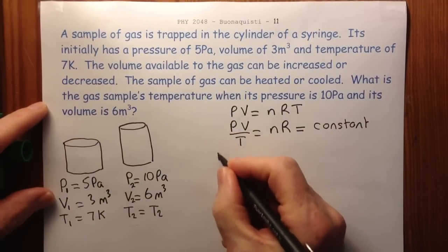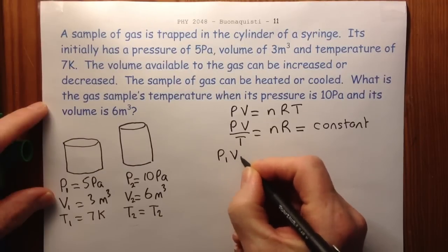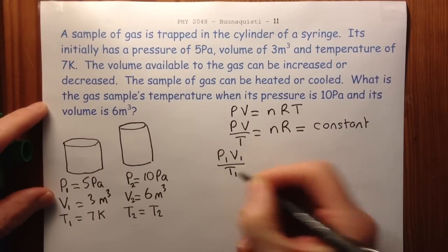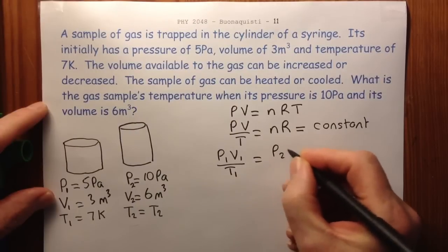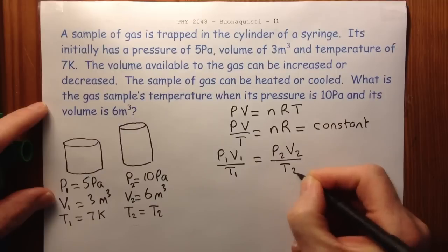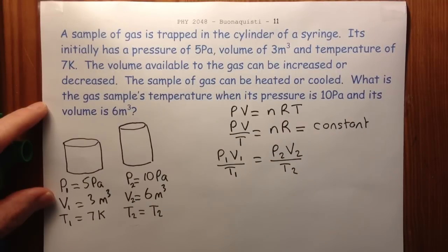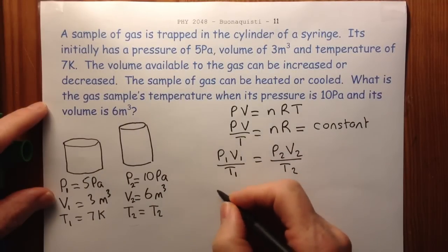So now we can say, well, if that's the case, then P1 V1 over T1, that's the initial state, must equal P2 V2 over T2, and that's the final state. So now we're putting numbers in.